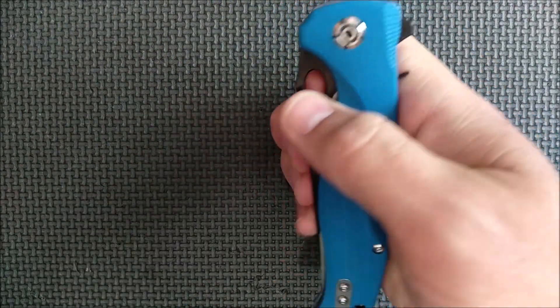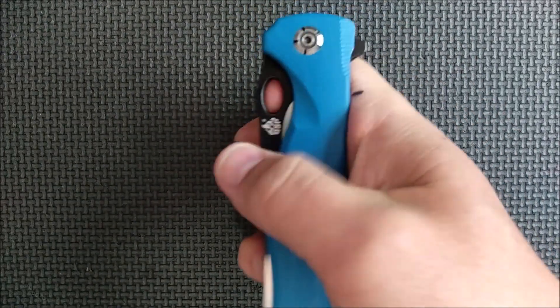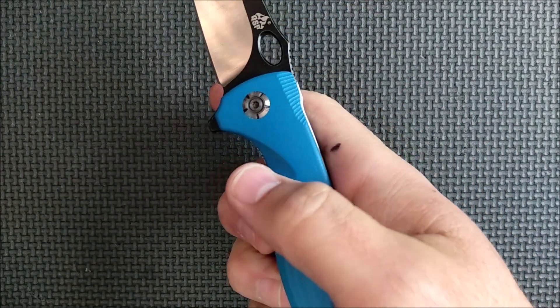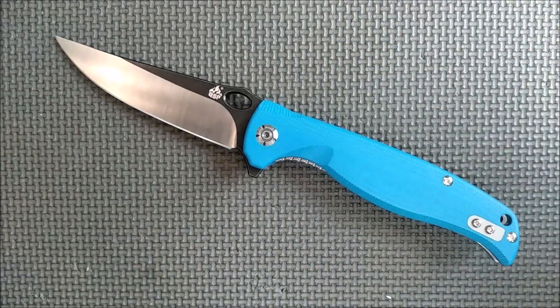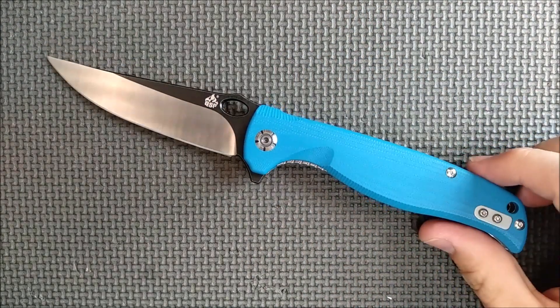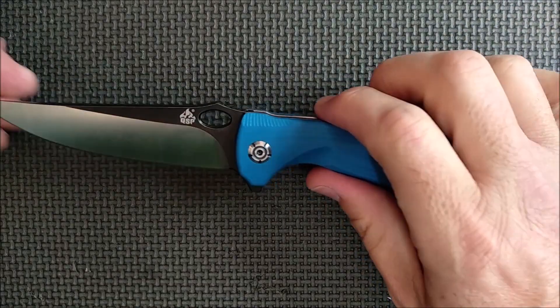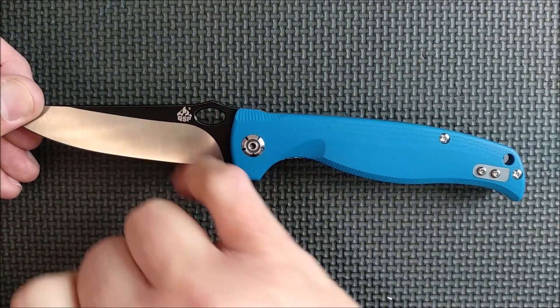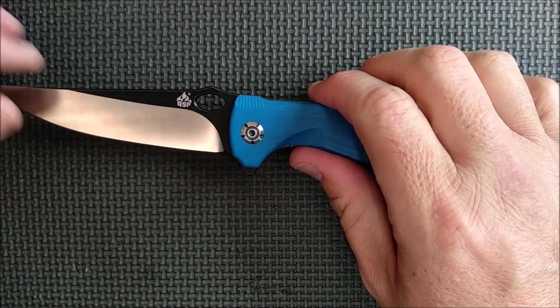It deploys with the flipper, and you can deploy it with that hole right there, just like that. And if you get good at it, you can flip it open using the hole from the bottom. I'm just not good at that yet, but I do okay. I got it to open. I wouldn't mind if that hole was just a tiny bit bigger for that bottom flicking, but not bad at all.